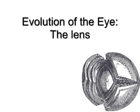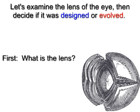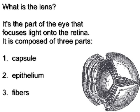Evolution of the Eye: The Lens. Let's examine the lens of the eye, then decide if it was designed or evolved. What is the lens? It's the part of the eye that focuses light onto the retina. It is composed of three parts: the capsule, the epithelium, and the fibers.